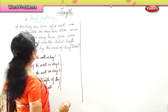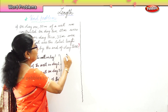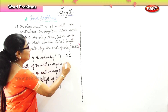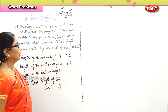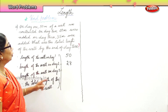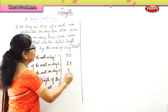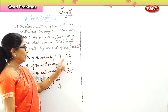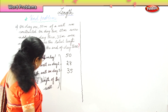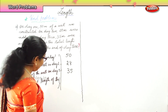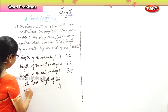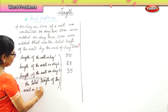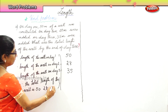Length of the wall on day one is 50 meters. Length of the wall on day two is 28 meters. Length of the wall on the third day is 35 meters. Finally, the total length of the wall is 50 plus 28 plus 35.